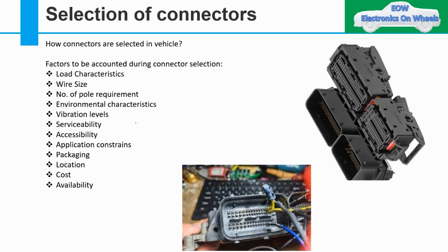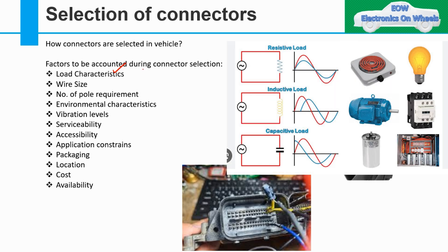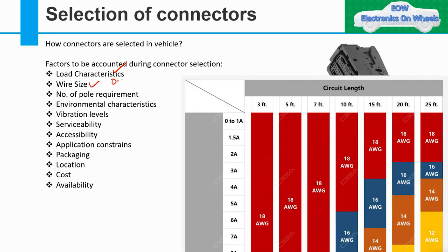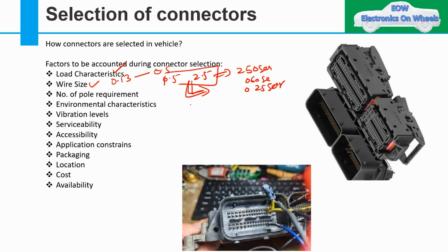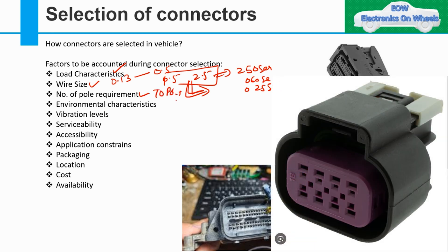How are connectors selected in vehicles? There are a few factors. The first is load characteristics — what type of load it is, whether inductive, capacitive, or resistive, and you have to consider that when selecting a connector. Then there is wire size — for example, if it is varying from 0.13 to 0.5 or 0.5 to 2.5, according to that wire size range you select the connector series, like 250 series, 060 series, or 025 series. Then the number of poles — whether it is a 10-pole, 12-pole, 20-pole, or 30-pole connector.